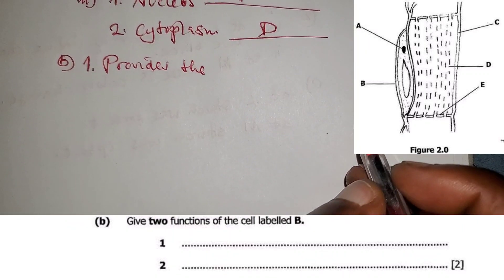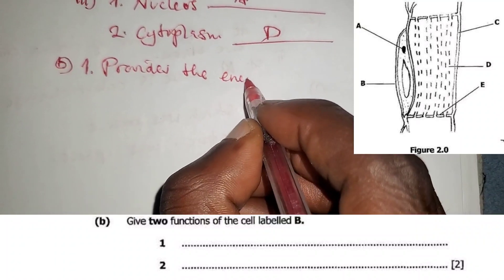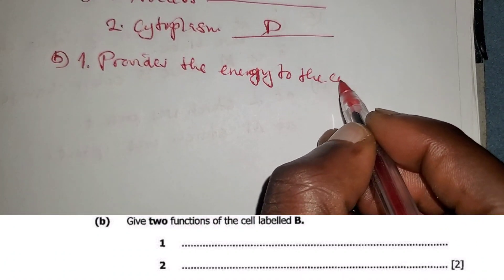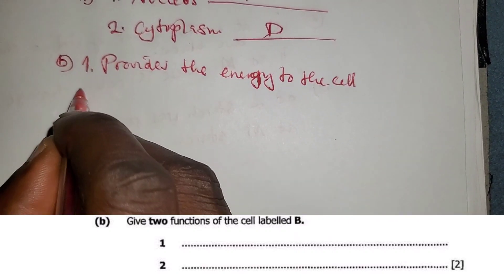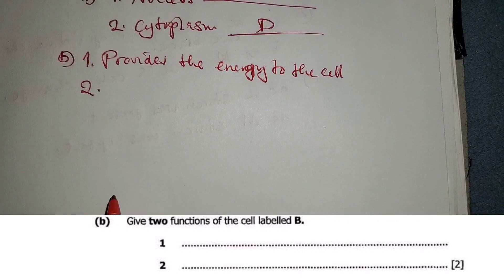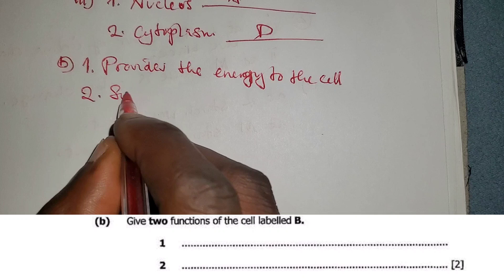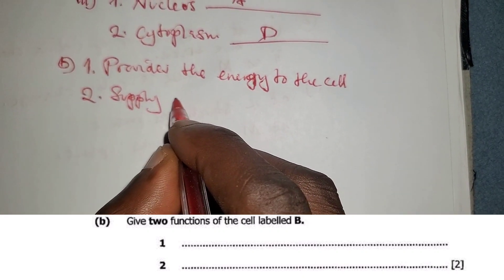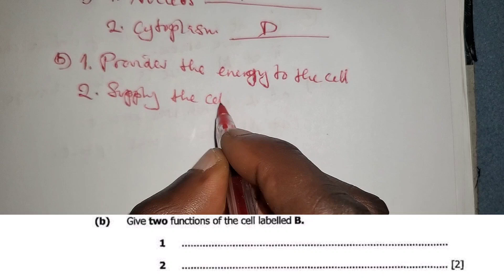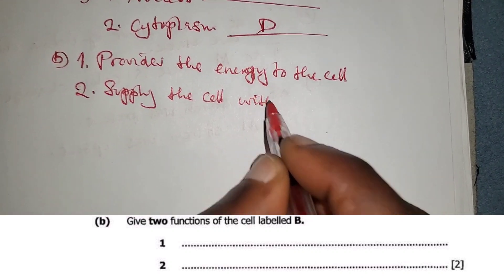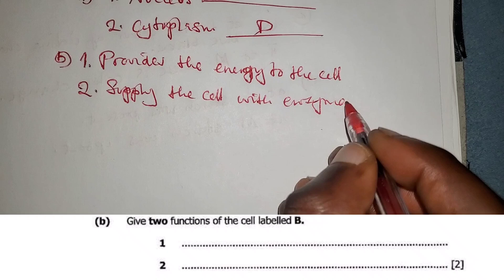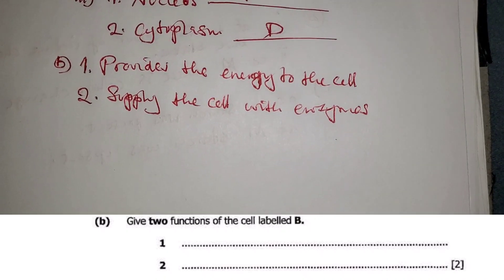Number two: apart from providing energy to the cell, it also supplies the cell with enzymes. These are the roles or functions of a companion cell.